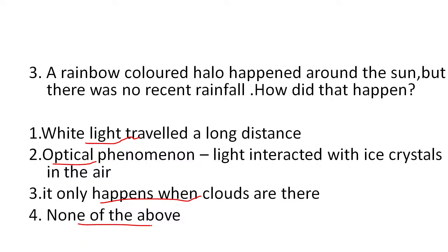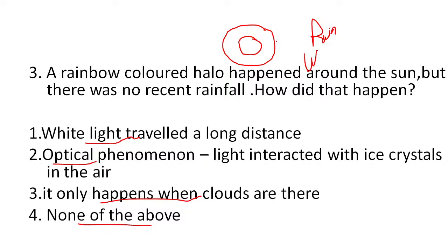If you have been reading the newspaper, many people saw a picture of the sun with a halo around it and there was no rain, no clouds, and it was not even winter — it happened during summer. Many people thought it was because of rainfall, but there were clear skies. The answer is it is an optical phenomena and light interacted with ice crystals in the air. Despite it being summer, there were ice crystals in the air, making this a rare phenomena.